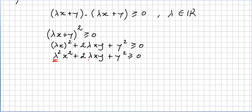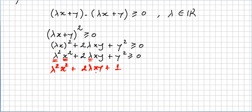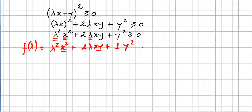We treat this as a function of λ: f(λ) = ‖x‖²·λ² + 2(x·y)·λ + ‖y‖². Here ‖x‖², x·y, and ‖y‖² are treated as constants. So we have a quadratic function of λ that must be greater than or equal to zero for all real λ.